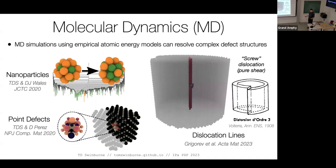We can simulate atoms with empirical force fields and energy models, and simulate these types of structures — nanoparticles, complicated point defects, dislocation lines — in these highly idealized settings, like nice Volterra dislocation operations, and look at these lines of localized disorder.